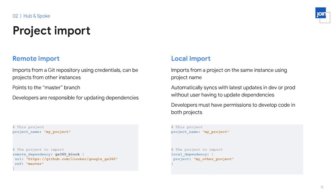In order to import logic, view files, and explores from the hub project, we utilize Looker's project import feature. There are two ways to import files. The first is remote import, which allows the developer to specify a git repository URL and point it to the master branch — when changes are made to the underlying project, it's the developer's responsibility to update dependencies. The second is local import, where both projects must be on the same Looker instance and developers must have develop permissions in both. With local import, projects automatically sync in both development mode and production, so the user is not responsible for updating dependencies — though this may not be the best option if users don't already have developer permissions in the hub.